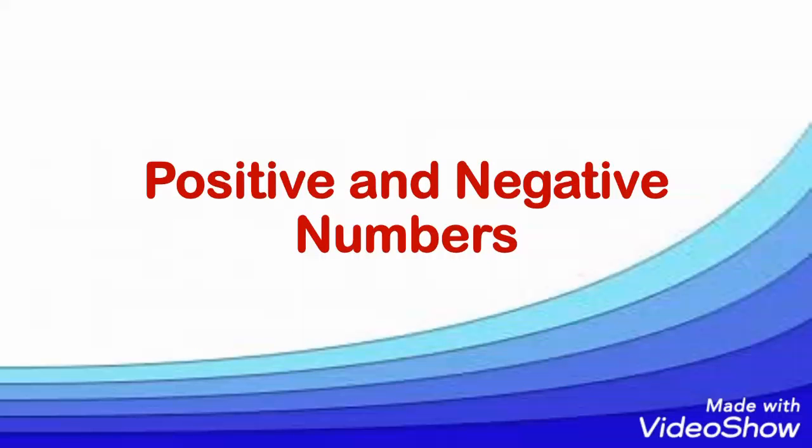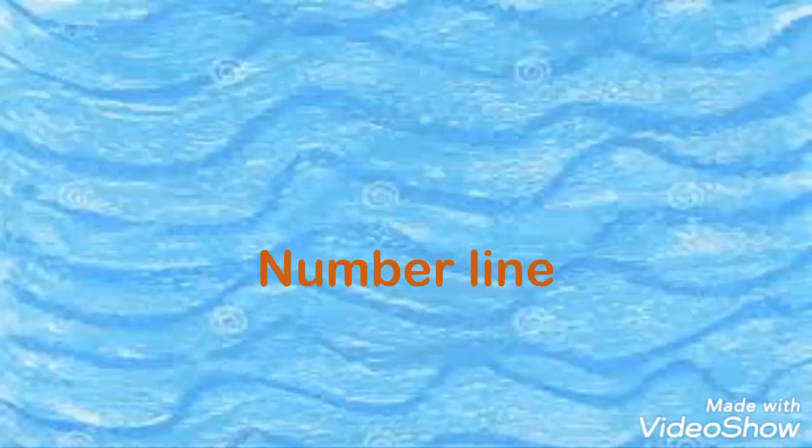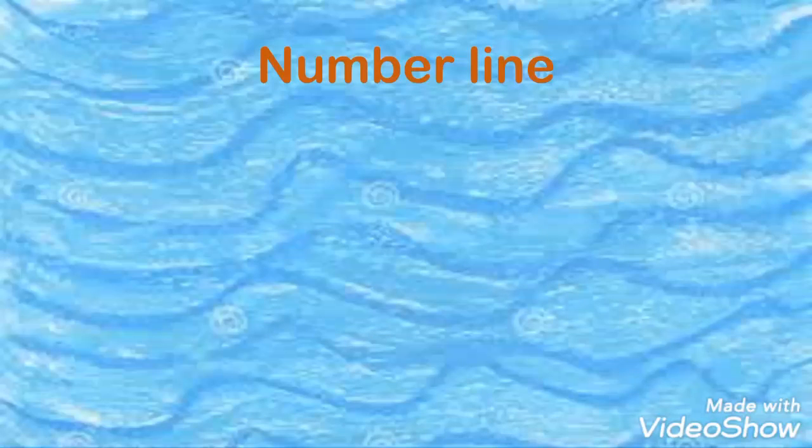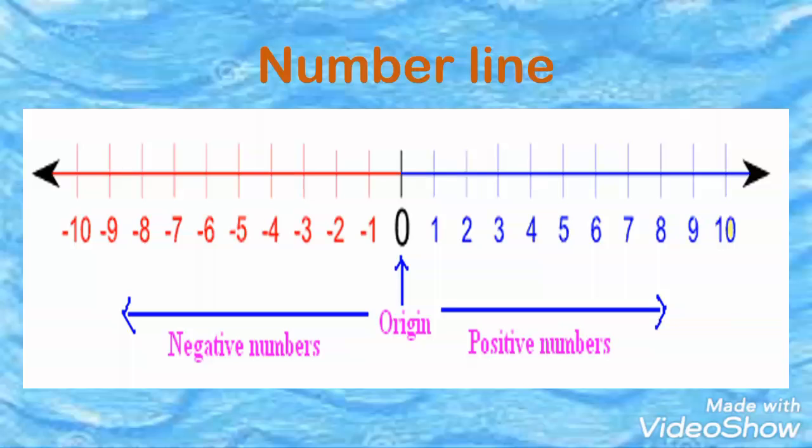Our topic for today is all about positive and negative numbers. This is a number line. We have 0 in the middle, positive integers on the right, and negative integers on the left.